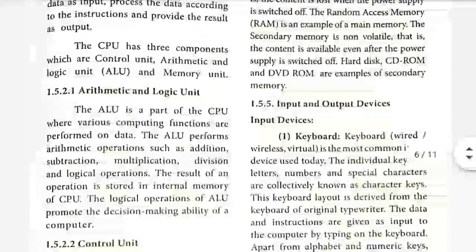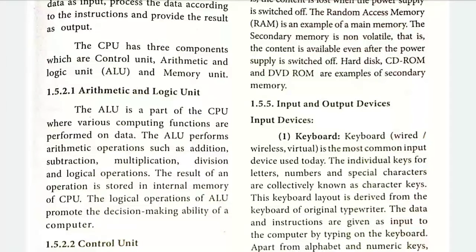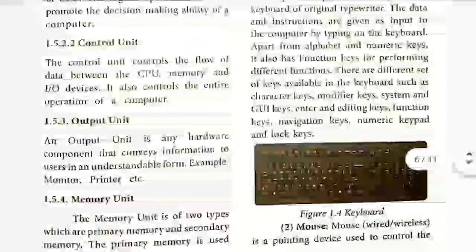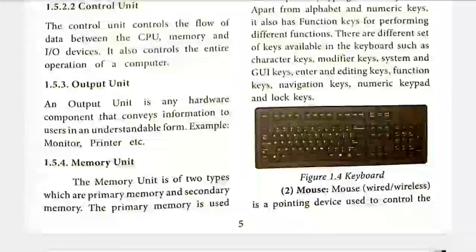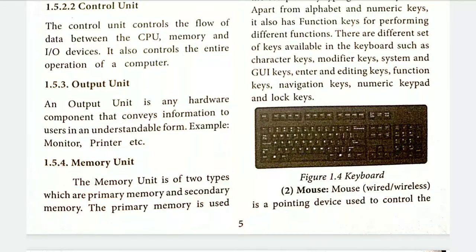The ALU is a part of the CPU where various computing functions are performed on data. The ALU performs arithmetic operations such as addition, subtraction, multiplication, division, and logical operations. It is also responsible for decision-making. The output unit is any hardware component that conveys information to the user in an understandable form — for example, monitor and printer. The monitor displays information visually and the printer prints a hard copy.